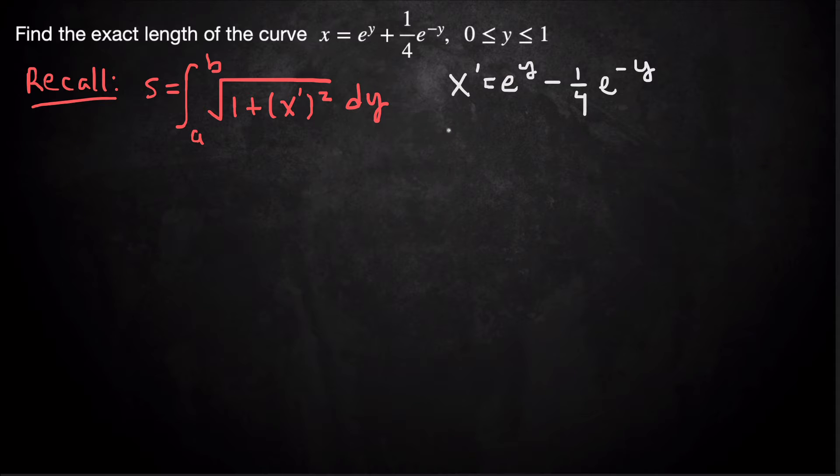So if we square that, x prime squared will be, well, foil this thing out. So get (e^y - (1/4)e^(-y))². And we'll get e^(2y). So square that first term, e^(2y).